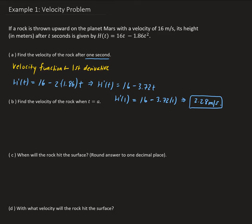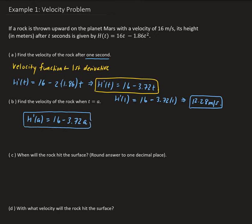The next part asks us to find the velocity of the rock when t equals a, where a is just a constant. We already have our velocity function, so we can evaluate it at a. That gives us h prime of a equals 16 minus 3.72a. That is the velocity function evaluated at t equals a.